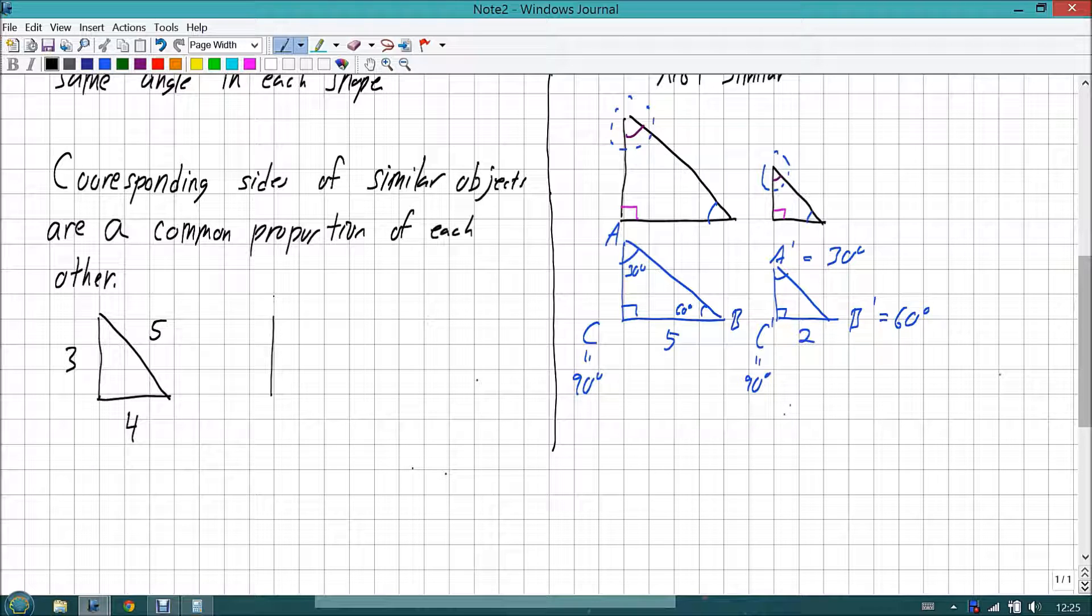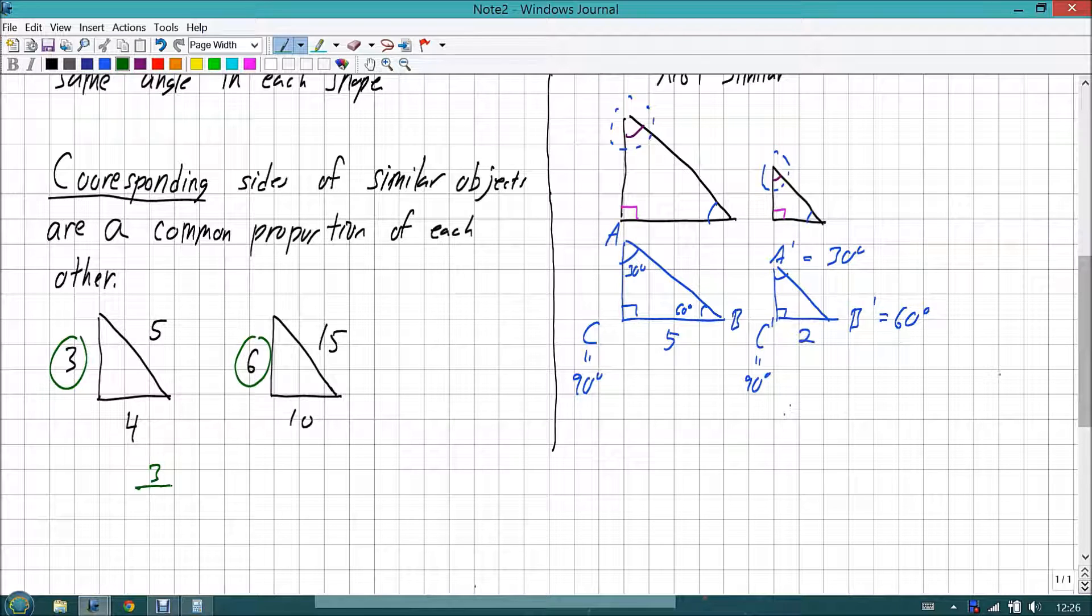If I was to make another triangle that was bigger whose sides lengths were 6, 10, and 15, would these be similar? Well, we would look at their corresponding sides. So 3 and 6 would be a corresponding side. To turn that into a proportion or a ratio, I would say 3 to 6. And then we have 5 and 15. Those would also be corresponding sides. So I would have a ratio of 5 to 15.